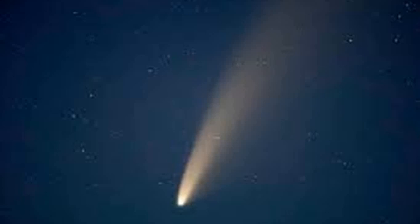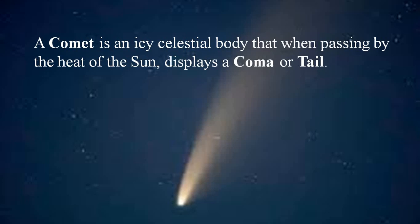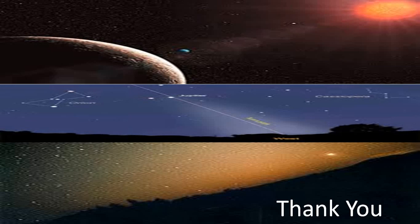In this picture we can see comets. A comet is basically a dusty snowball which orbits the Sun. It is an icy celestial body that, when passing near the heat of the Sun, displays a coma or tail. This icy body is made up of a mixture of water, ammonia, carbon dioxide, and methane with dust. These materials came from the time when the solar system formed. These are the fundamental components of the universe. Thank you very much.